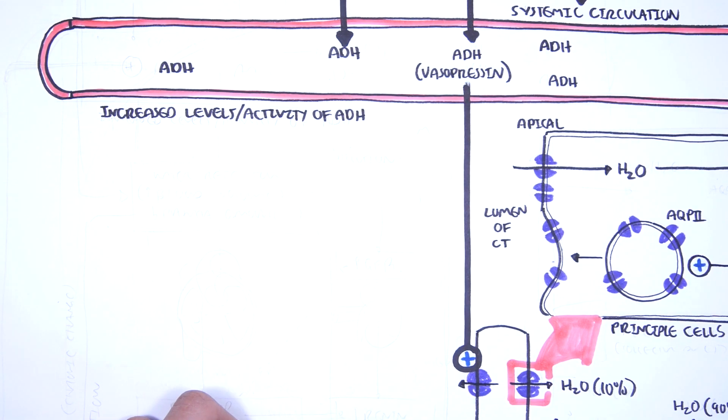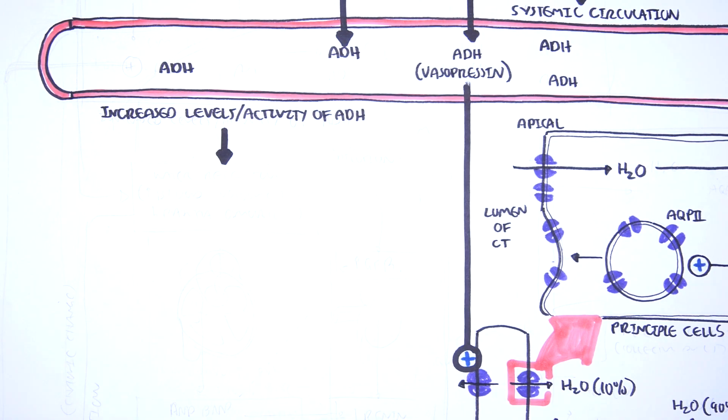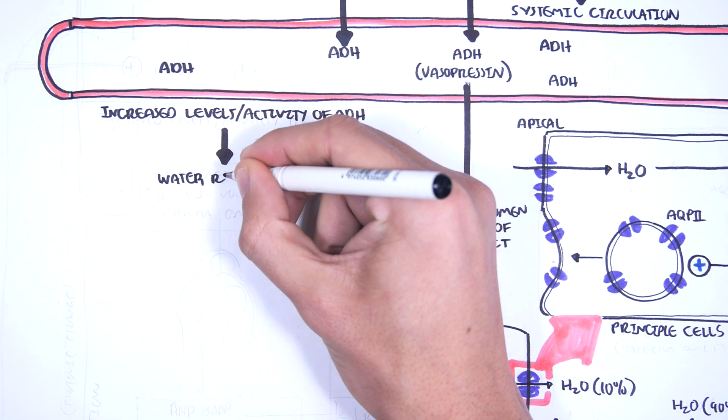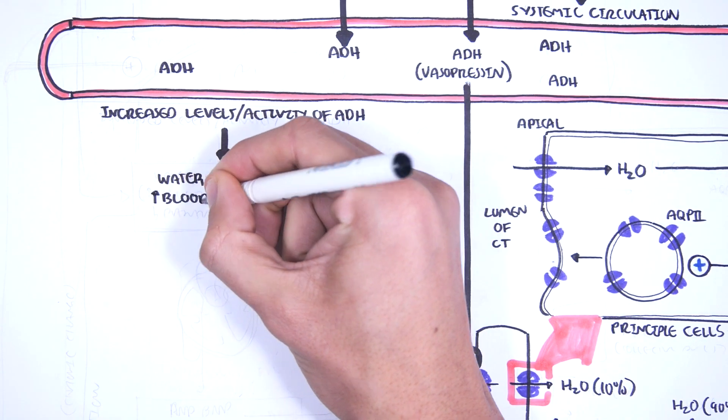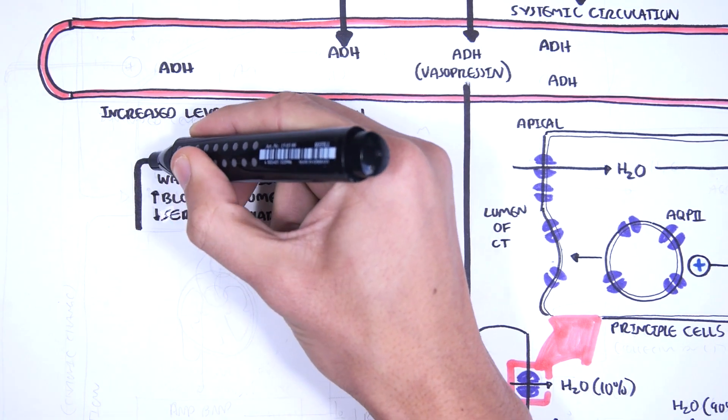Regardless of the cause, the pathophysiology of SIADH begins with uncontrolled secretion of ADH. When this happens, you retain more water, you increase blood volume, and you will decrease serum osmolarity.